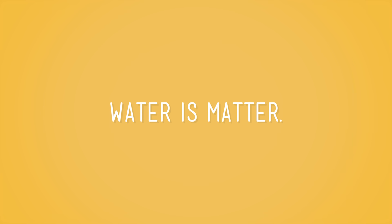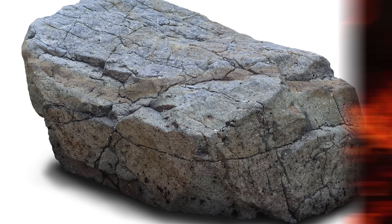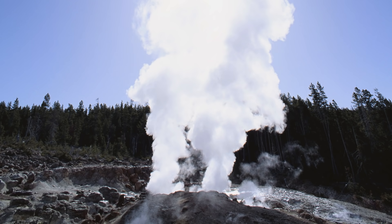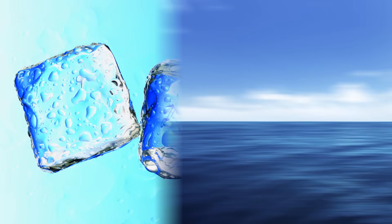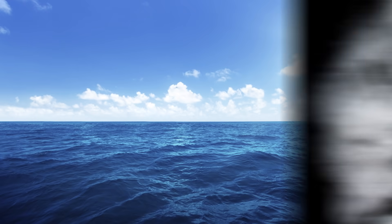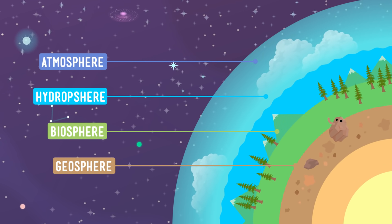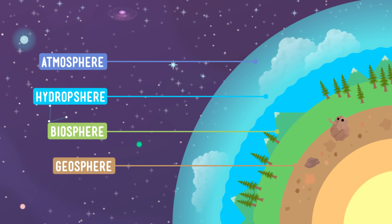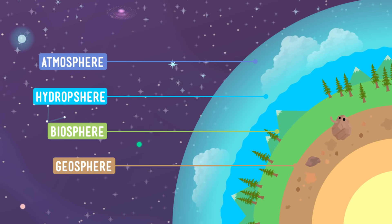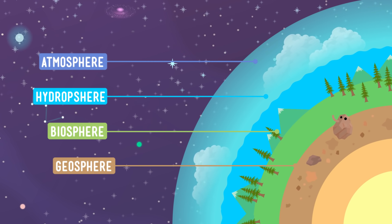As you know, water is matter, and we've learned that matter can change states. It can be a solid, a liquid, or a gas. For water, that means it can be ice, liquid water, or water vapor. And as all of this water, which makes up the hydrosphere, winds its way around the world, it interacts with the other three spheres.